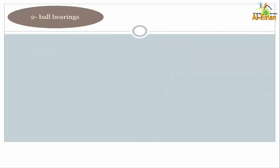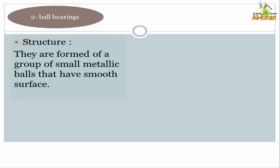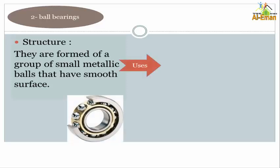Number two: ball bearings. Structure: They are formed of a group of small metallic balls that have smooth surfaces. Like that. How could we use it, or how it works?